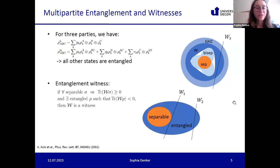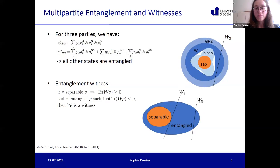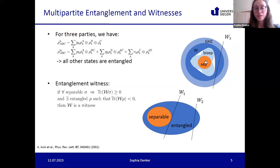An entanglement witness is an observable W which is positive for all separable states and negative for at least one entangled state. In the bipartite case, witnesses W1 and W2 are both positive over the separable states; W1 would detect all states in a larger area and W2 only a smaller area. For the multipartite case, we want witnesses to be positive not only on the separable but also on the biseparable states — this gives a witness for multipartite entanglement.